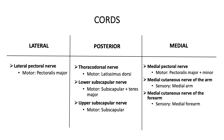Two things to highlight: the medial pectoral nerve and lateral pectoral nerve can cause confusion as to which one innervates pectoralis minor. The way to remember it is that the medial pectoral nerve — M for medial — innervates both major and minor. The other confusion is which subscapular nerve innervates teres major; you just have to remember that it's the lower one which innervates both subscapularis and teres major.